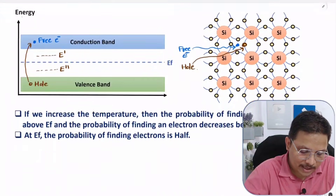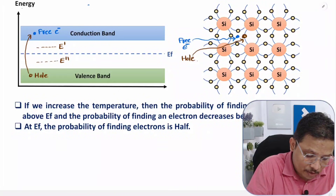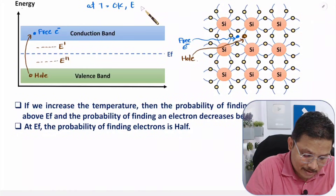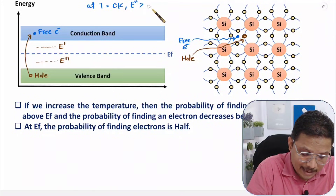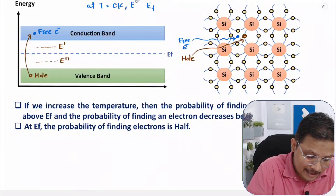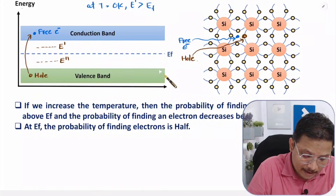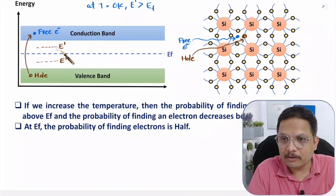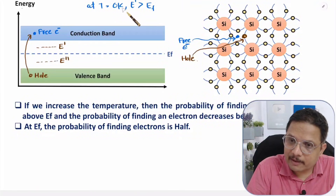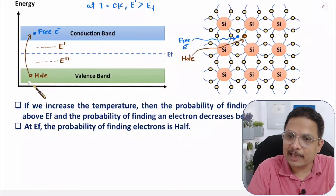Practically, at T = 0 Kelvin, consider energy state E' which is greater than EF. Since all electrons are in the valence band at 0 Kelvin, the probability of finding an electron at E' (above EF) is 0.